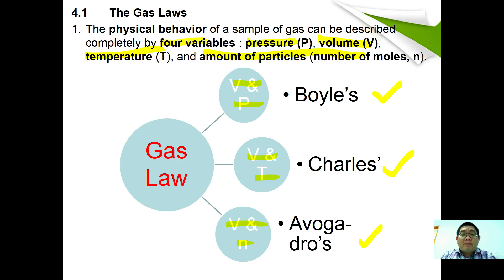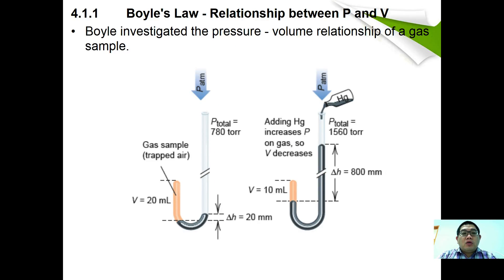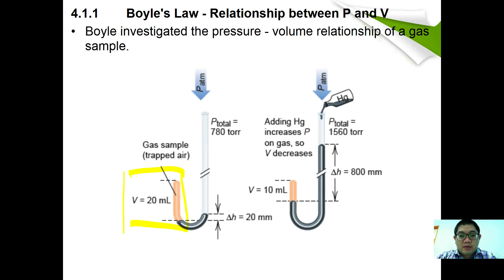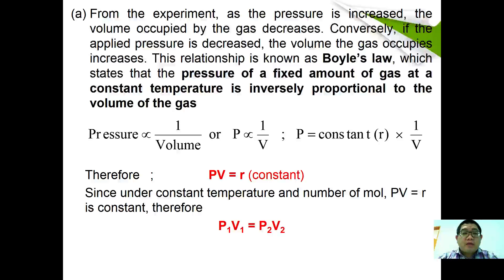Boyle's law investigates the pressure-volume relationship of gases. Using a manometer, at low pressure the volume of gas is large. As mercury is added to the manometer, the height of mercury increases, indicating increasing pressure, and the volume decreases. Conversely, if the applied pressure decreases, the volume of the gas increases.